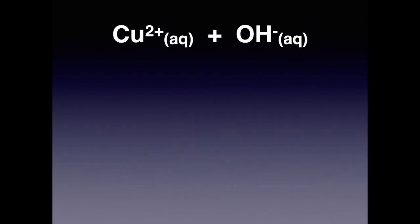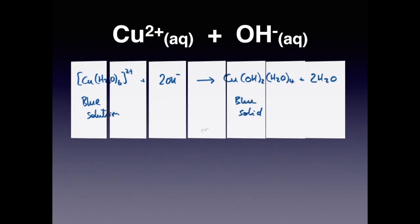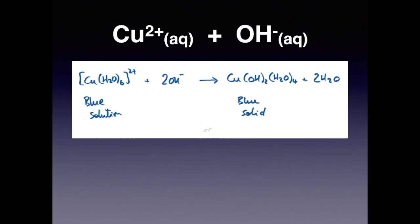The next reaction is Cu2+ aqueous plus hydroxide ions. There's one way of writing the reaction equation, or you can write the shorthand version which looks like that. In this reaction, again we're starting with the Cu(H2O)6 2+ ion, which is blue, and we're reacting it with 2 hydroxide ions.